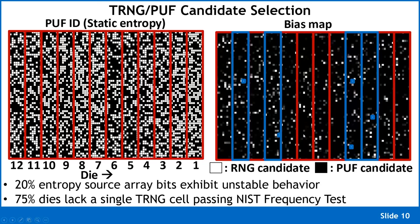When examining multiple dies, there are plenty of bright pixels — cells near the 50% point. But looking for a perfectly balanced butterfly curve, we found that of 12 dies, only four contained at least one perfect TRNG cell — one with a probability of exactly 0.49999... of producing a zero or one.